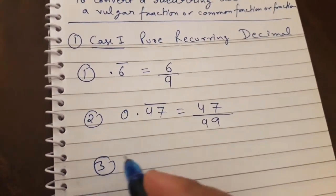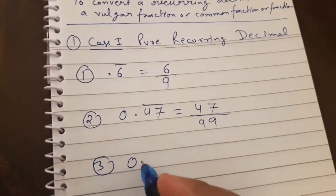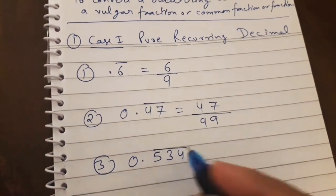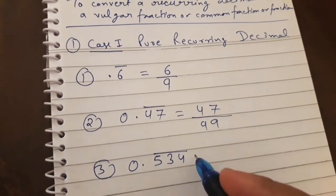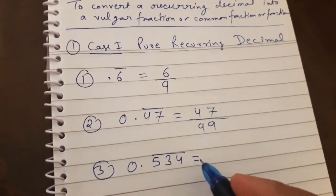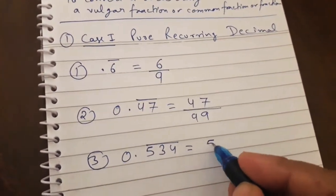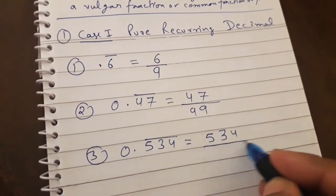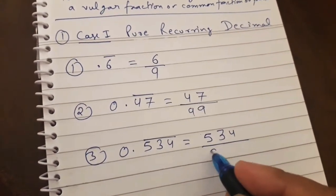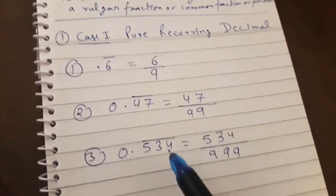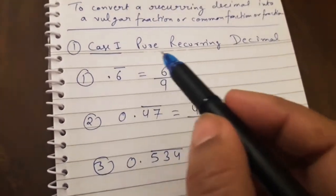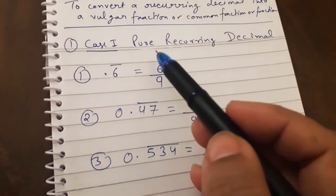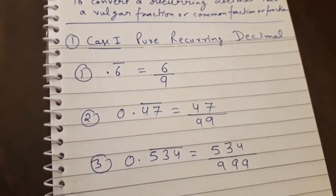Third, if it is a three-digit recurring decimal, like 0.534 recurring, how can you change it? Just write 534 over triple nine — that is 534 over 999. In this way you can convert any pure recurring decimal into a fraction.